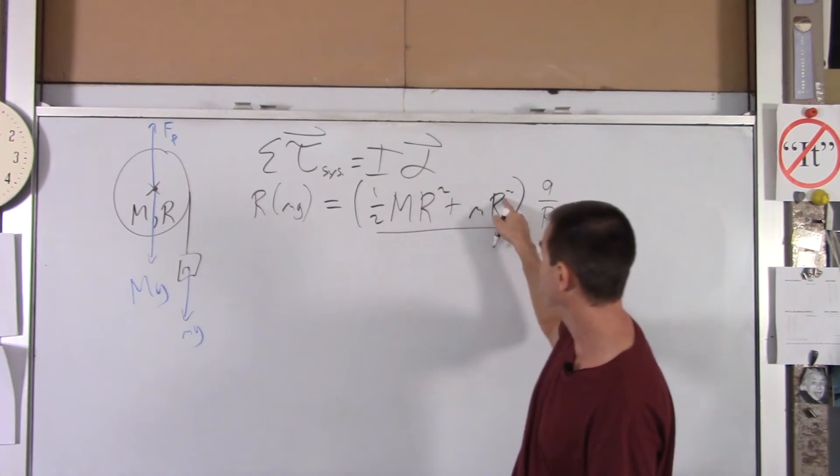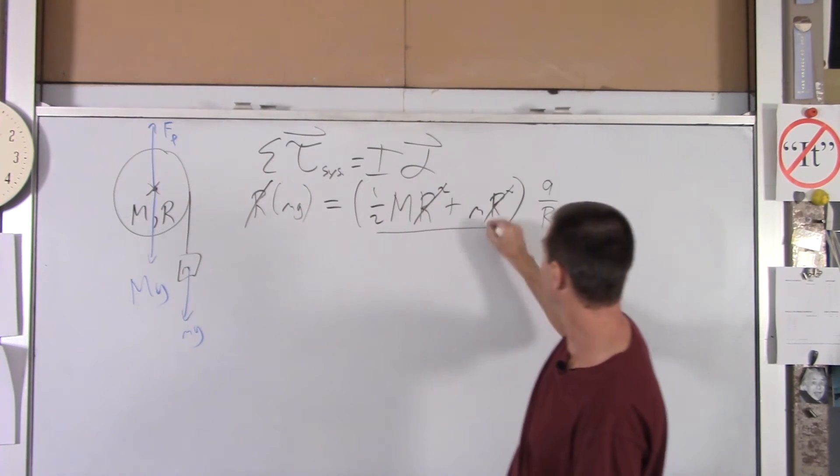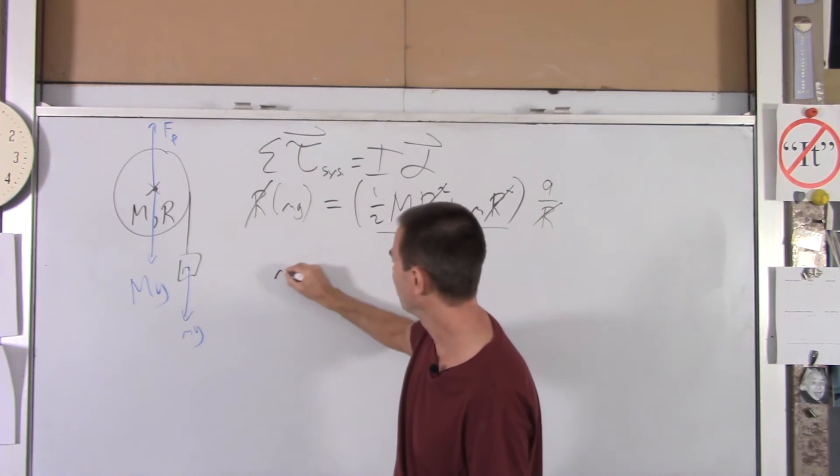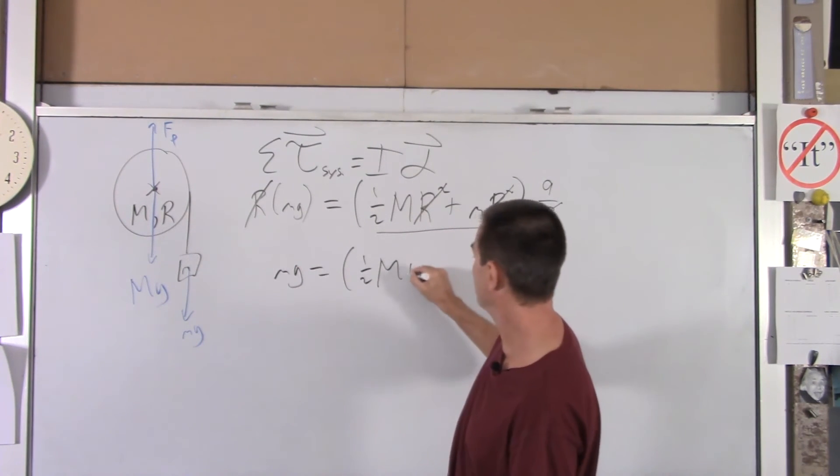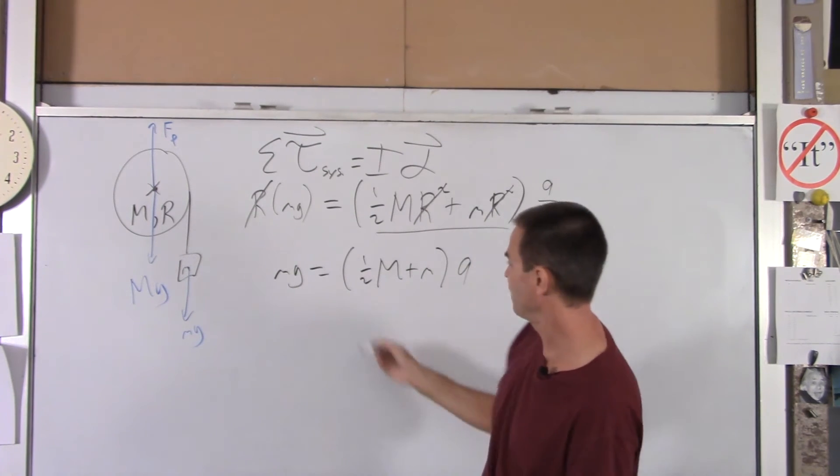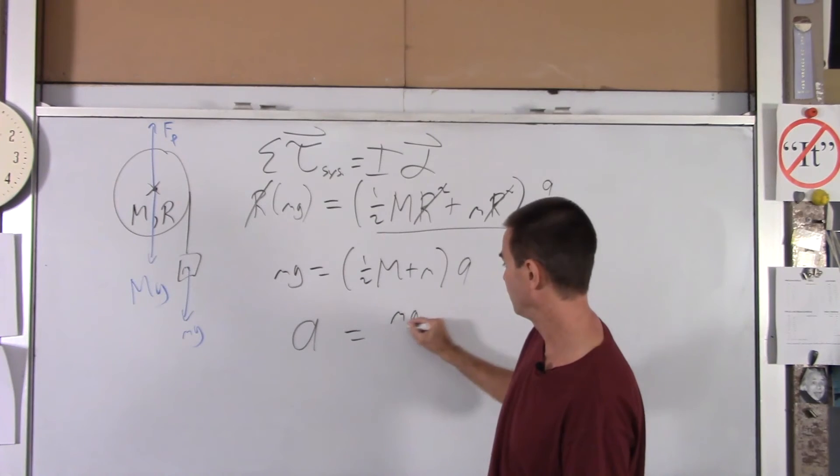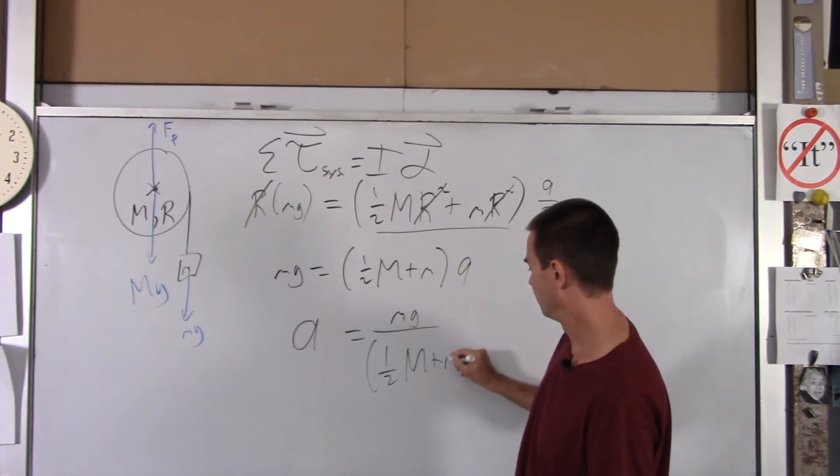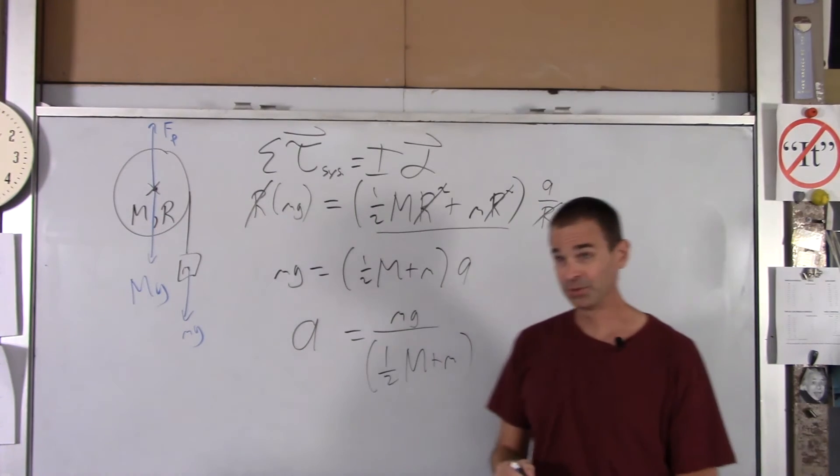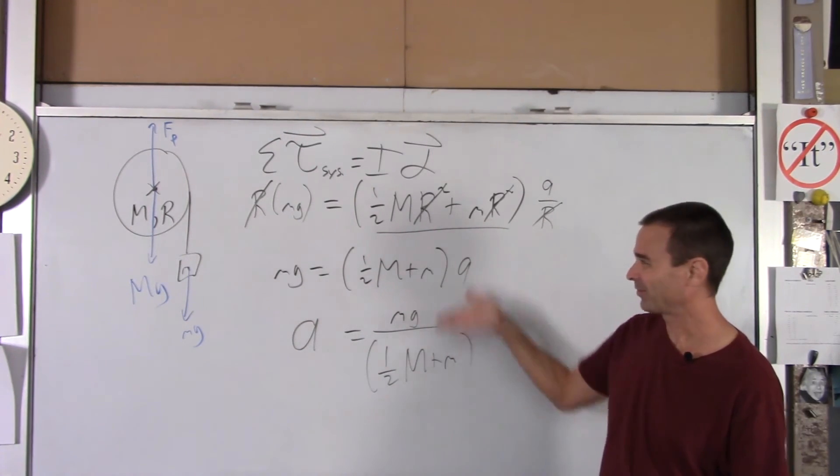You've got one R canceling with one of these, and this guy canceling with one of those. So I'll drop all my radii. And then you end up with little mg equals one-half big M plus little m, A. And A of the little dude is little mg over one-half big M plus little m. So you'll note that it's a really short solution. You get the acceleration in a couple lines of work.